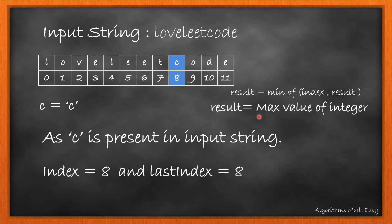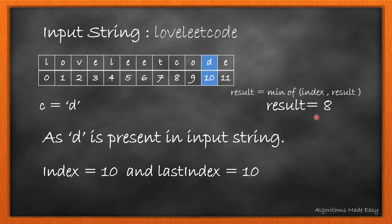So result gets updated to 8. Moving to D, it is also a unique character present at index 10, so its last index also becomes 10. But here, the minimum of result and index is still 8, as 8 is less than 10. Thus, the result value won't update.